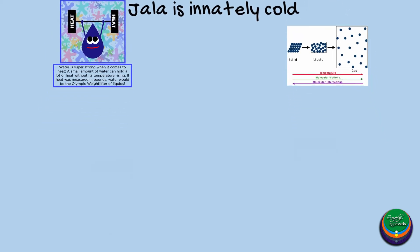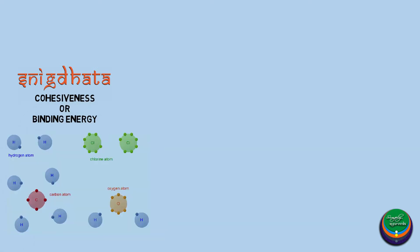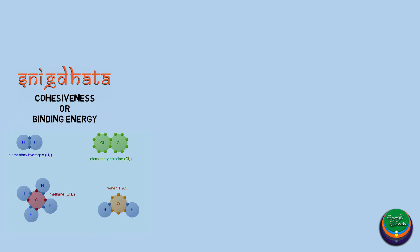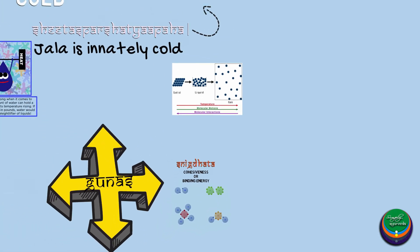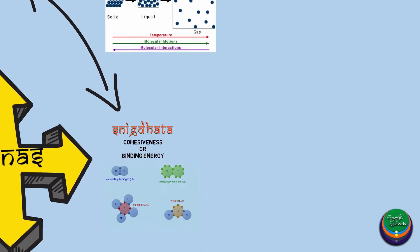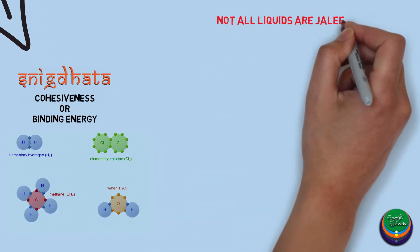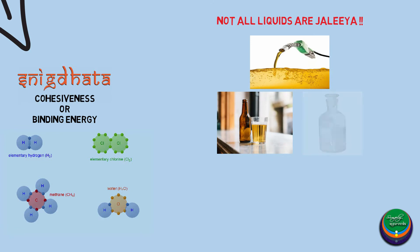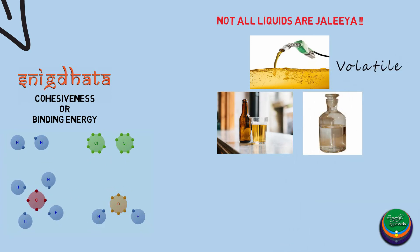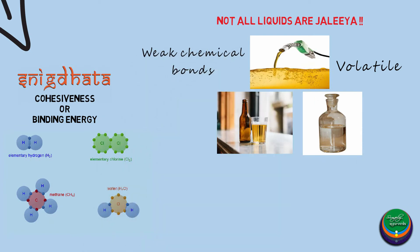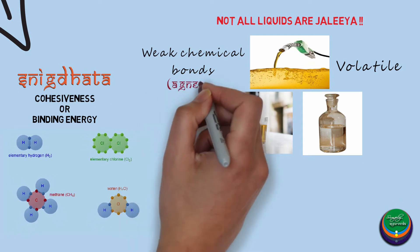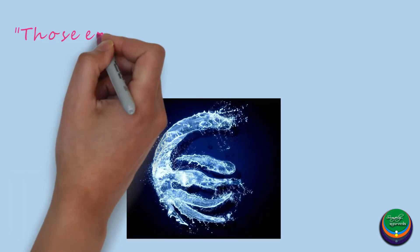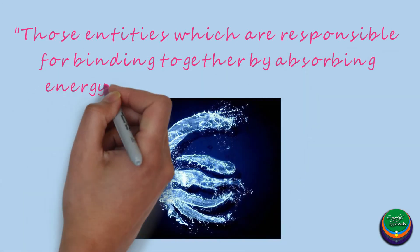Let us now look into some of the other interrelated gunas of Jala. Snigdata refers to the cohesiveness, binding energy, or chemical bonds which are responsible for the mass and stability of entities, and is in turn responsible for Shitasva. Not all liquid entities are predominantly Jaliya in nature from the purview of Snigdata. Take, for example, petrol, alcohol, and nail polish remover — these are volatile liquids whose chemical bonds are easily broken and hence lack the Snigdata guna, making them more Agneya in nature. Thus, only those entities which bind together by absorbing energy are Jalabhuta Pradhana.